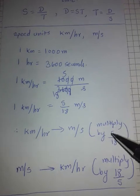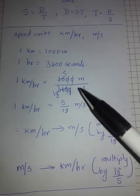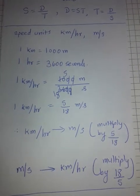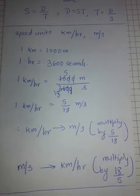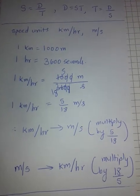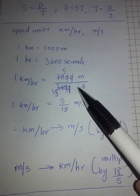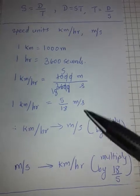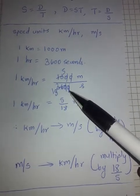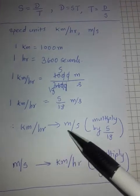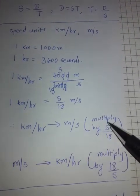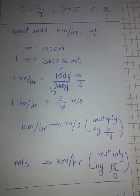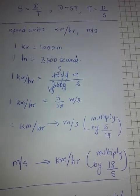Don't try to memorize these conversions. I have shown you how the conversion works. In the exam, use this common sense approach — recall that 1 km = 1000 m and 1 hour = 3600 seconds — rather than memorizing the multipliers blindly. Now let's proceed to examples.